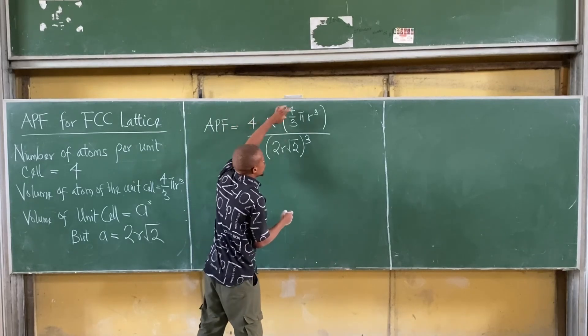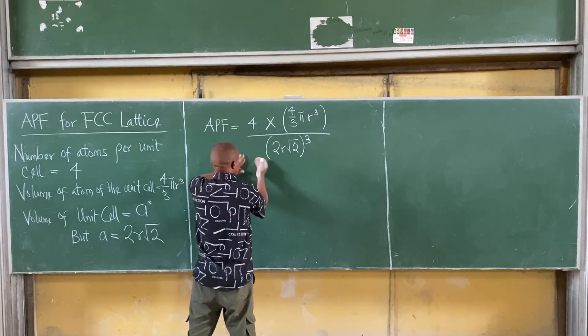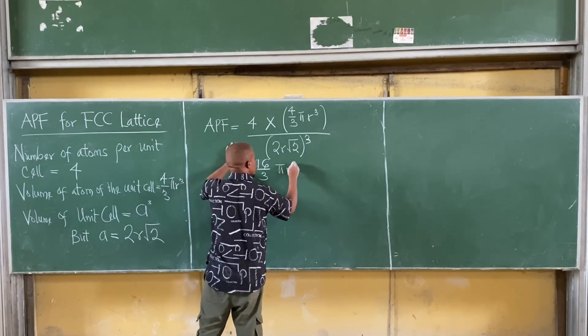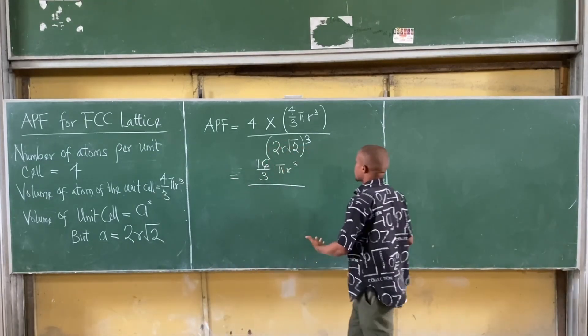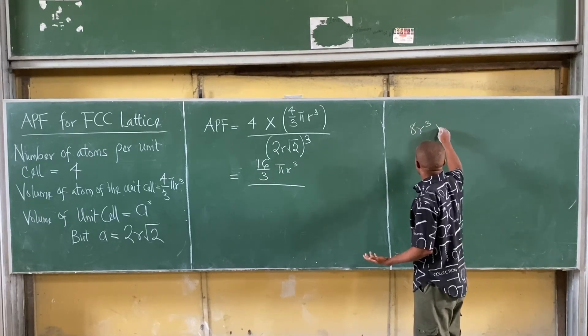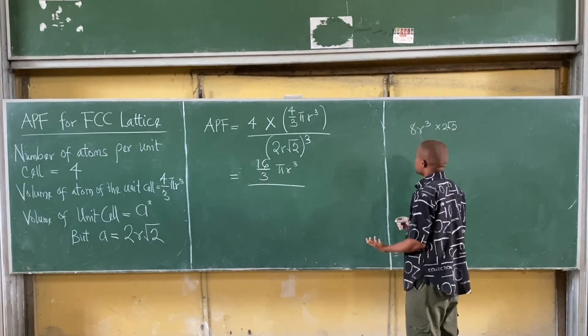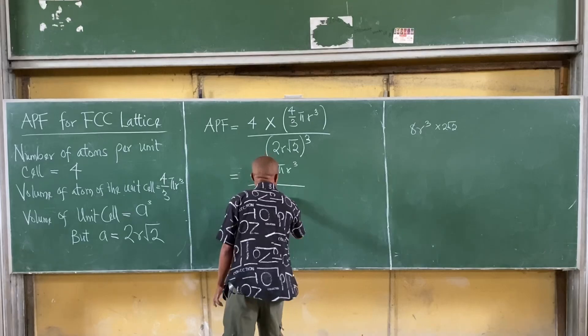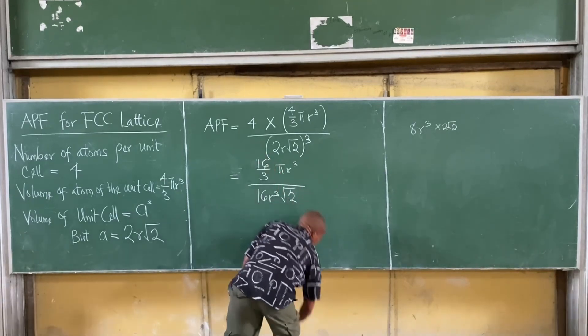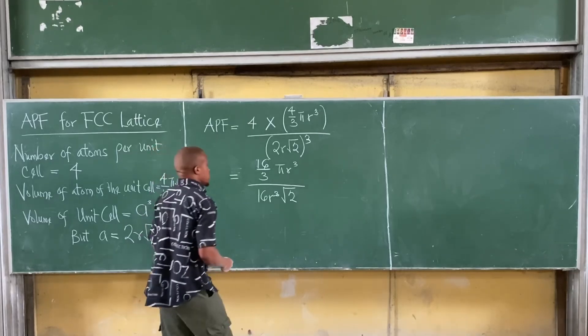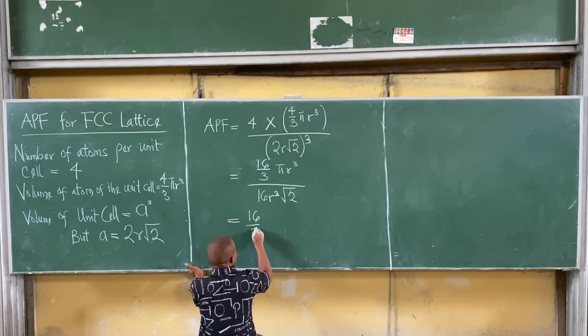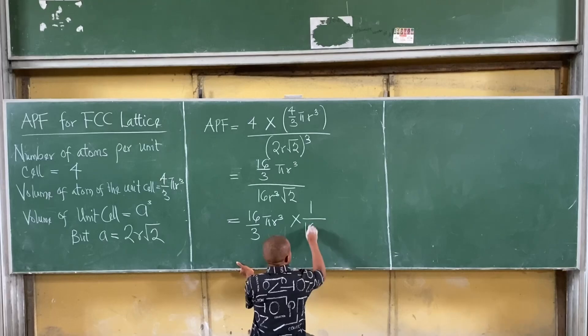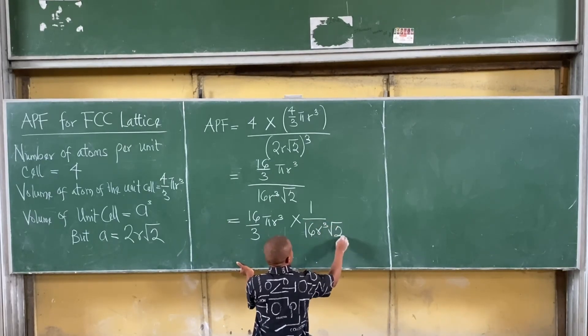And therefore, my atomic packing factor becomes 4 times 4/3π radius³, 16/3π radius³, divided by, now simplifying this, I'm having 8R³ times 2√2. Therefore, I'm having 16R³√2.